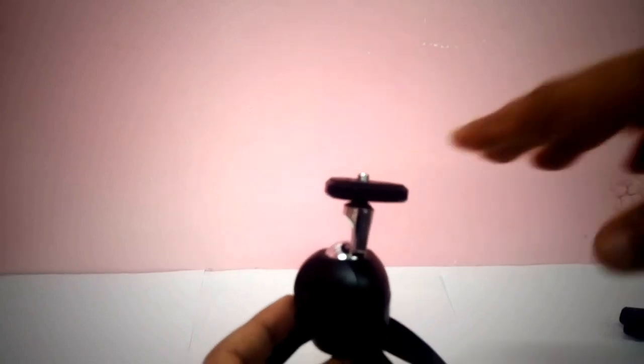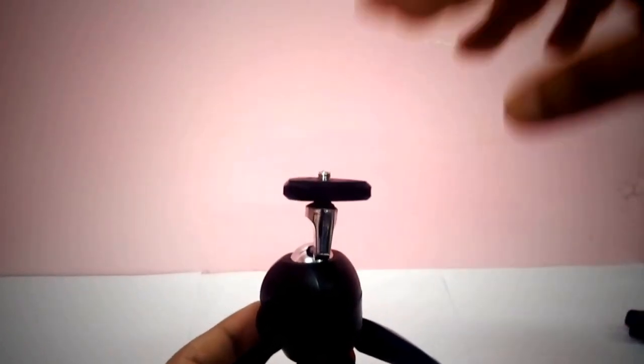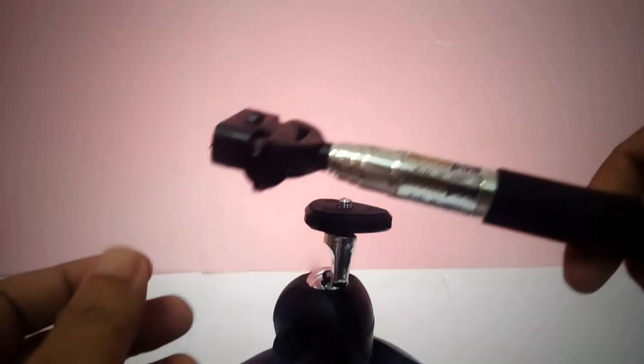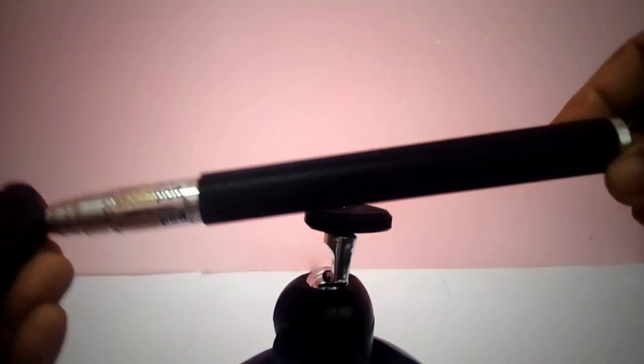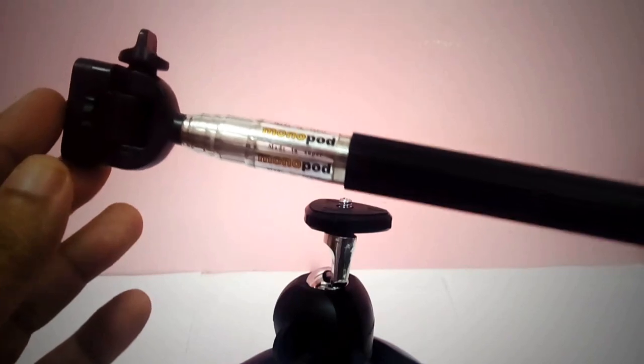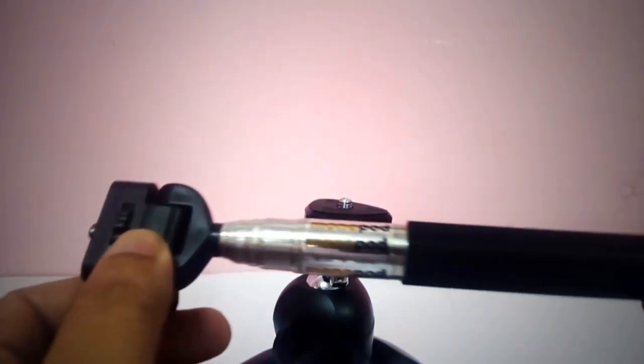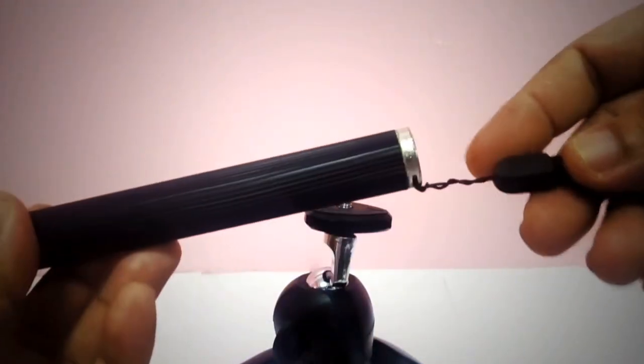So this is a typical monopod. It has an attachment for a digital camera or a phone. What we are going to do is put this monopod into the mini tripod.